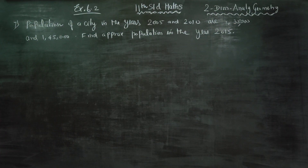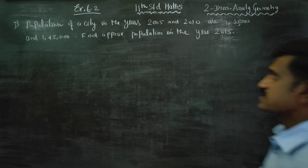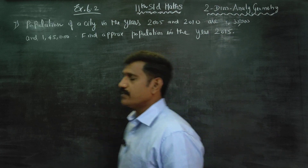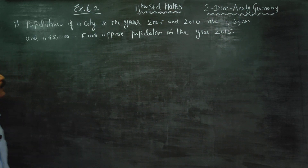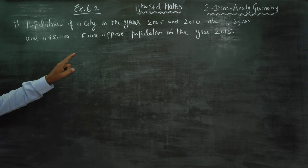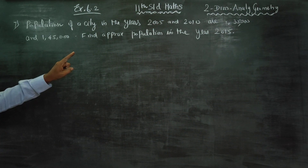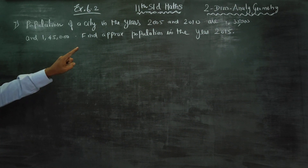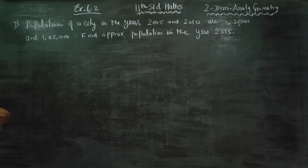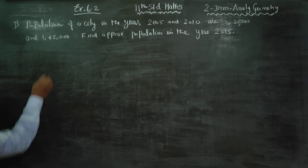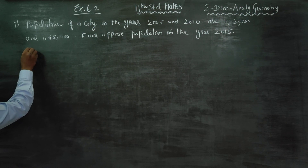Dear 11th Standard Students, I am Metro Karanagaran. In exercise number 6.2, sum number 7: the population of a city in years 2005 and 2010 are 1,35,000 and 1,45,000.